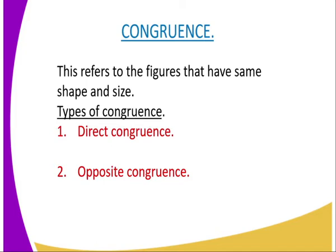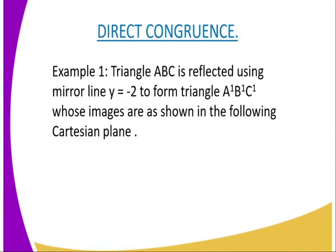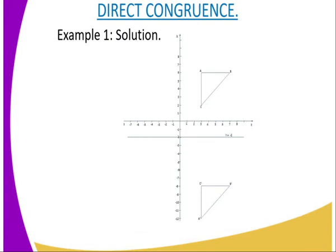In direct congruence, we can look at an example here and we'll make a conclusion later on so that we can understand what direct congruence really is. In direct congruence, the example is: triangle ABC is reflected using mirror line y equals negative two to form triangle A prime B prime and C prime, whose images are shown in the following Cartesian plane. You can see that it is well plotted.